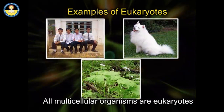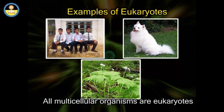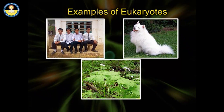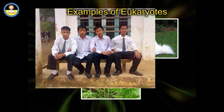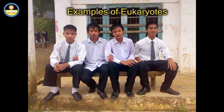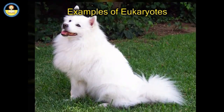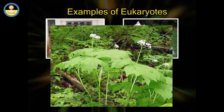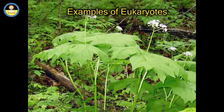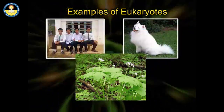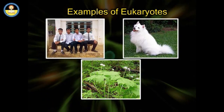All multicellular organisms are eukaryotes with very well-developed cells. For example, humans, dogs, and trees all have different types of cells forming highly developed systems.